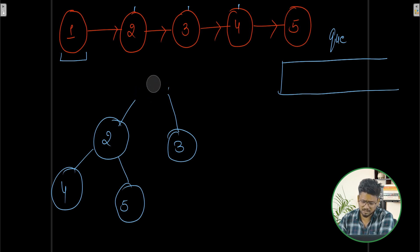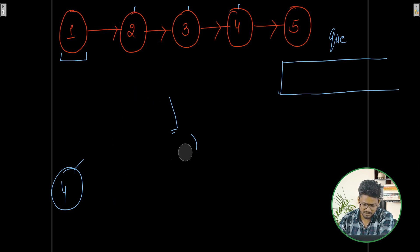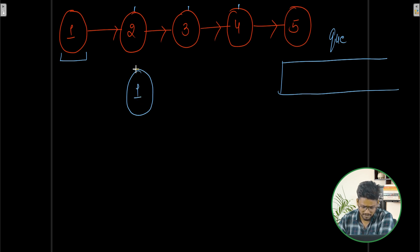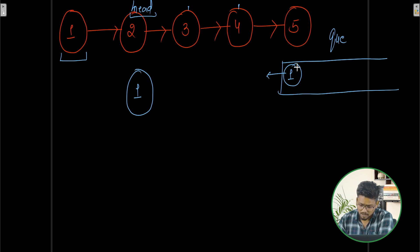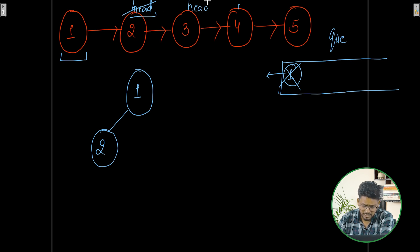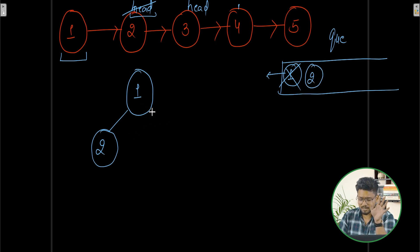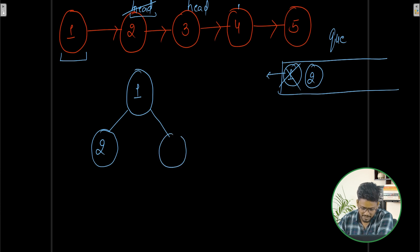Now let's figure out how we will do this in code. I will make a root node and push it into the queue. After creating the root, I will move the head to the next node. While head is not null, I take a node from the queue, make the next linked list node the left child, push that left child into the queue, and then make the following node the right child, also pushing it into the queue.